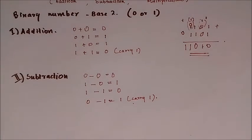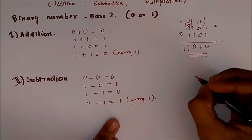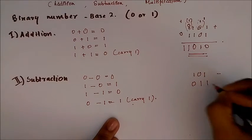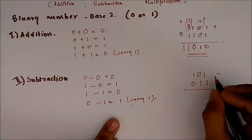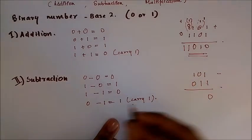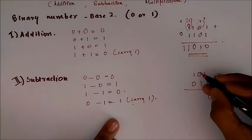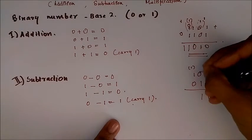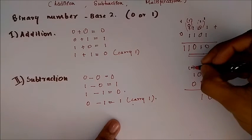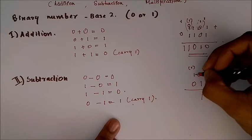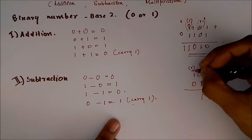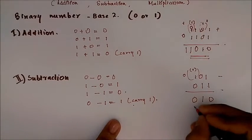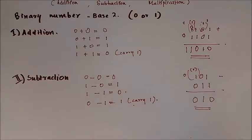Now let's consider a problem. Let it be 101 minus 011. First, 1 minus 1 gives 0. Now this 1 minus 1 gives 0, and this combined 0 minus 0 gives 0. So 010 is our final answer.